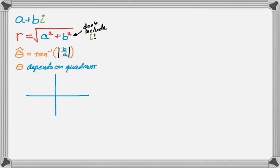And just to review for you, we have four quadrants. In the first quadrant, theta is just the same as theta hat. In the second quadrant, it's going to be pi minus theta hat. In the third, it's pi plus theta hat.